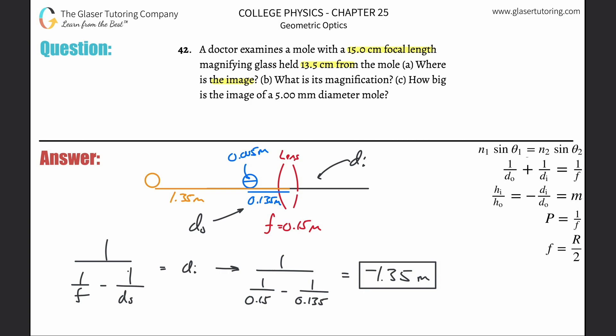Now, so where is the image? It's on the same side of the object, not on the other side of the lens as we're used to seeing. That's the significance of that negative sign. So that would be basically the answer to letter a, or you might want to say 1.35 meters to the left. I don't know exactly how they want that to be phrased, but I think you have the idea.